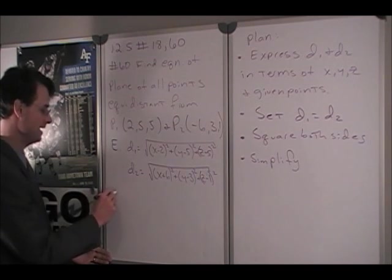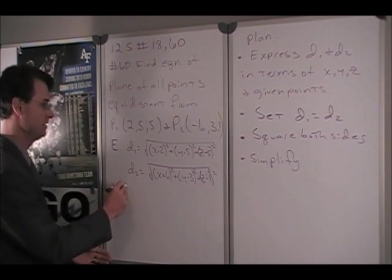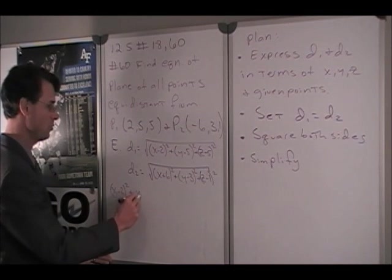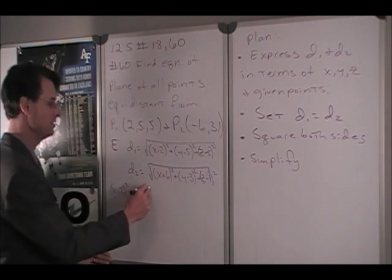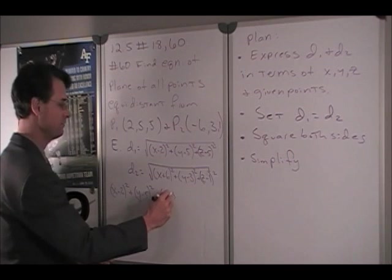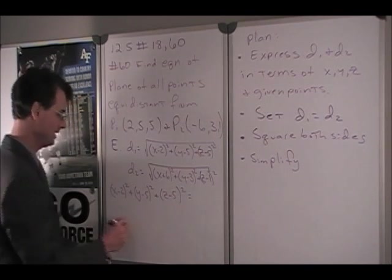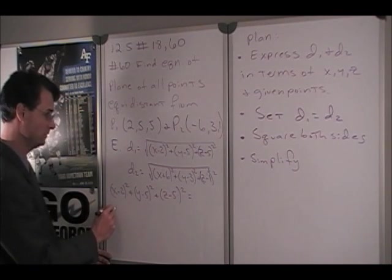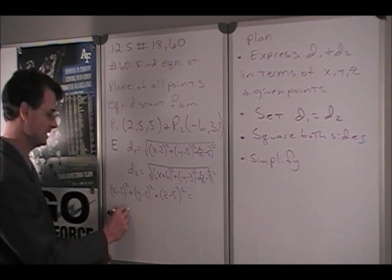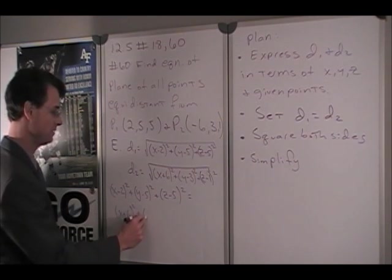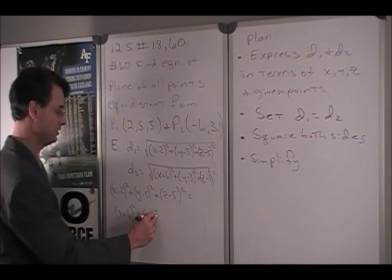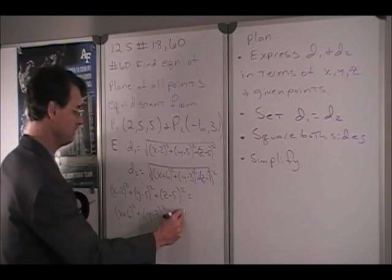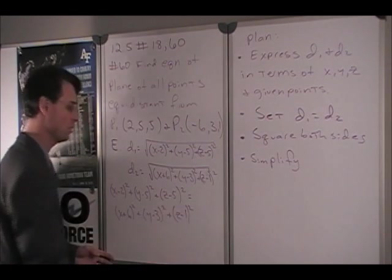You get X minus 2 squared plus Y minus 5 squared plus Z minus 5 squared is going to be equal to X plus 6 squared plus Y minus 3 squared plus Z minus 1 squared.